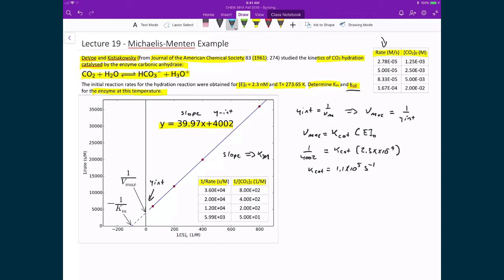And then to find my Michaelis constant, I'm going to use the slope of the line, because I know that that's equal to the Michaelis constant divided by the maximum rate. And so I'm going to have my Michaelis constant is equal to the slope found from the fit times the maximum rate. I can then substitute in for those numbers. The slope is 39.97, and my maximum rate was 1 over 4002. And so when I solve for this, then what I get is 9.99 times 10 to the minus 3 molar.